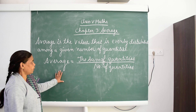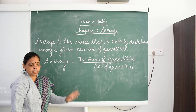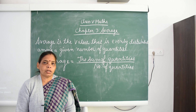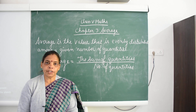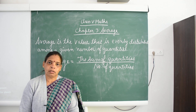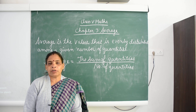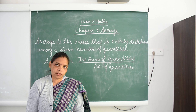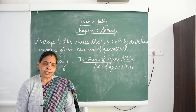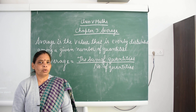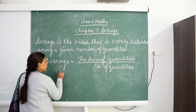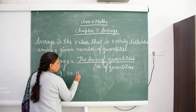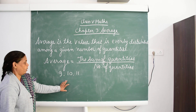We will understand this by taking an example. Let's say the average age of Class 5 students is 10 years. It means all the students of Class 5 are 10 years old? No. Some are 9 years old, some are 10 years old, and some are 11 years old.